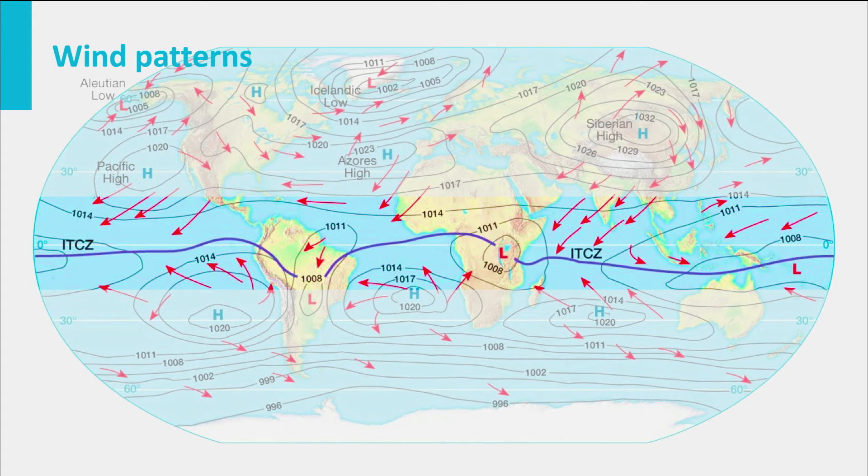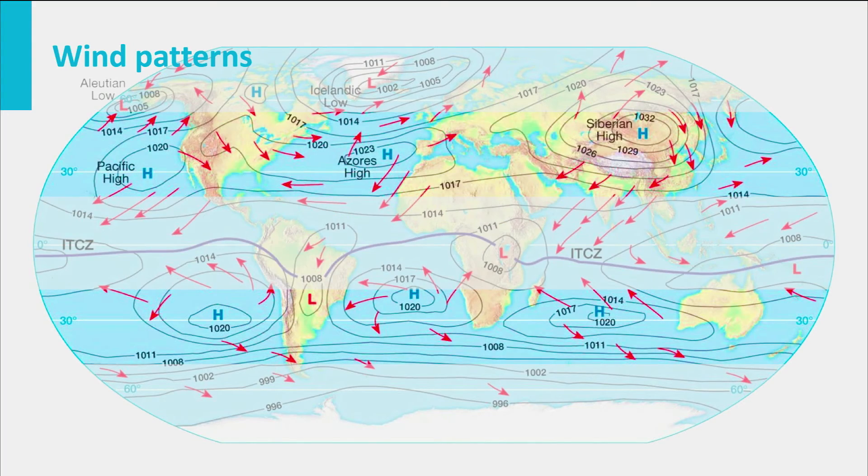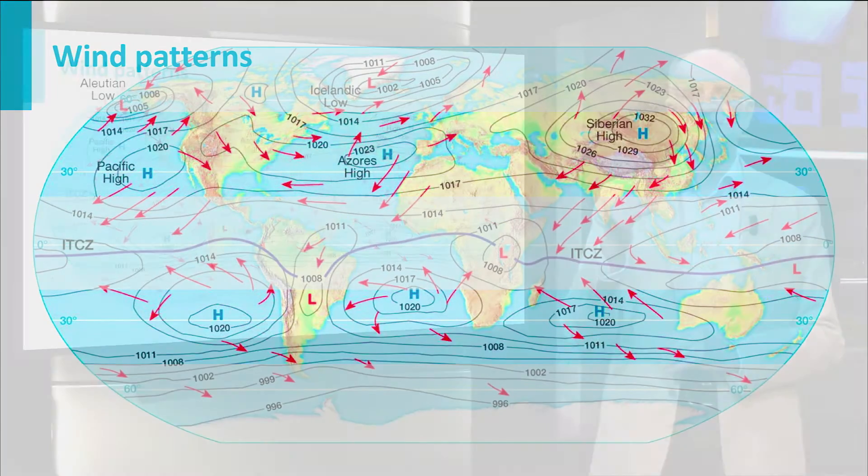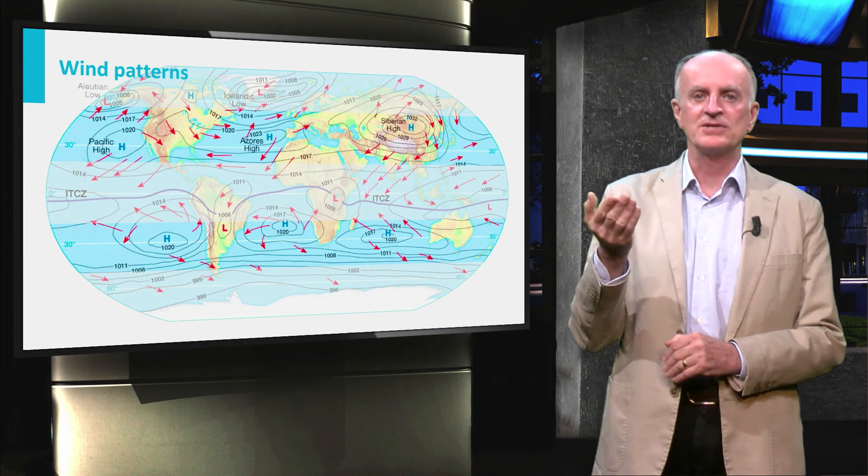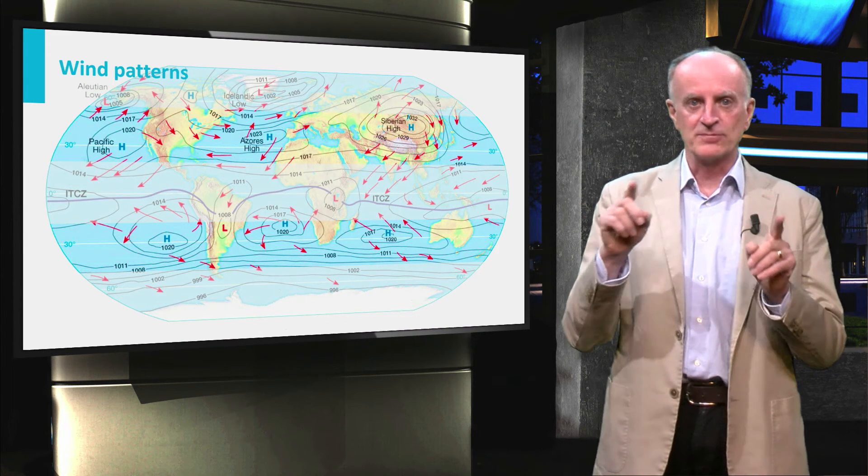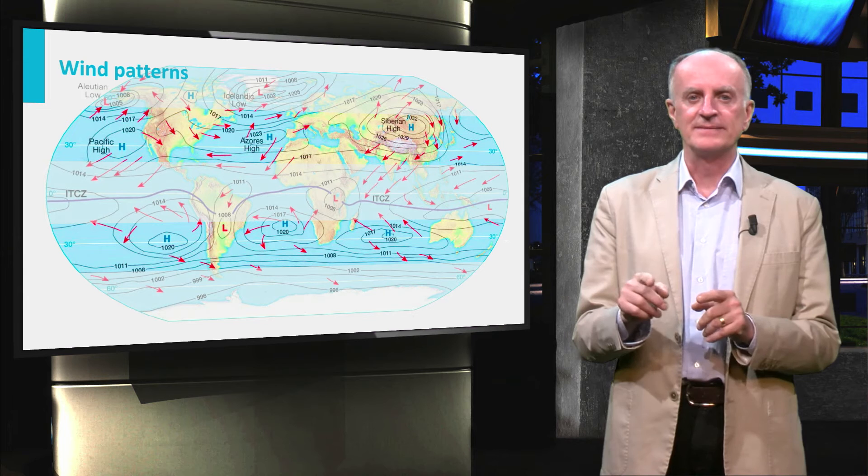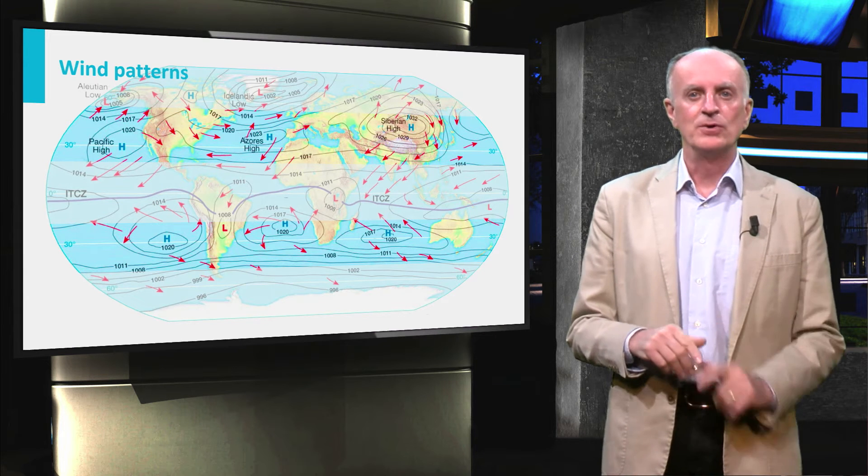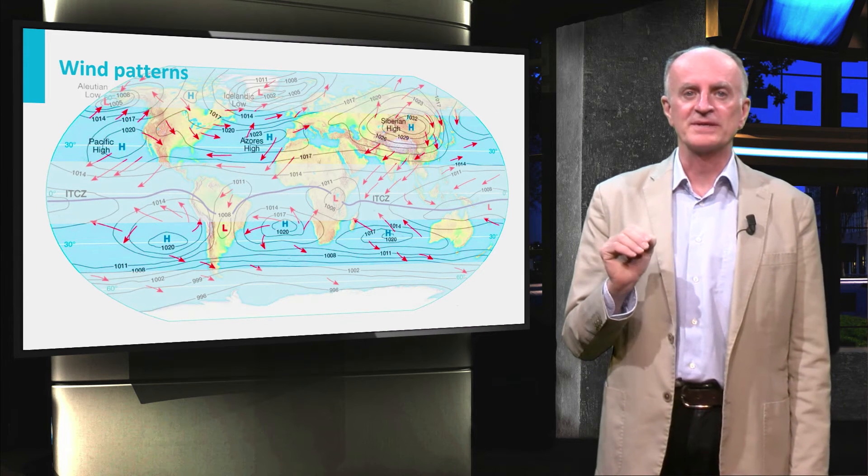This region is called the intertropical convergence zone. To the north and south of the intertropical convergence zone, two areas of high pressures are found, where air masses move downwards and are pushed towards the east. On the map, you can also see a new and very important effect.